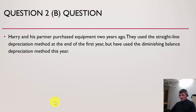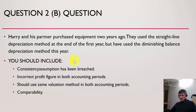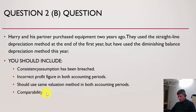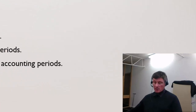Another question: a business purchased equipment two years ago using the straight-line depreciation method and changed to the diminishing balance method this year. This breaches the consistency assumption. An incorrect profit would be recorded in both accounting periods. We should use the same accounting method or valuation method in order to have better comparability from one period to the next. I hope that's been useful to you — I can make another one of these videos to reflect other questions, but this is direct feedback in relation to your mid-year exam.